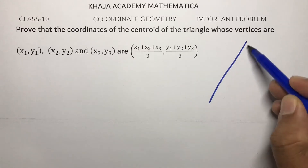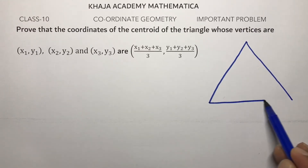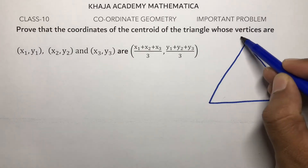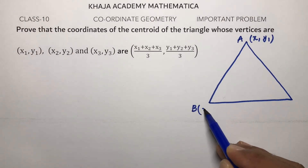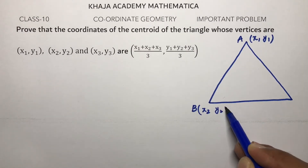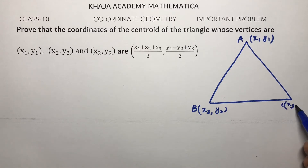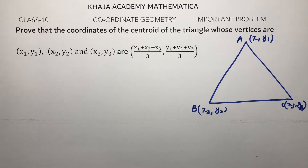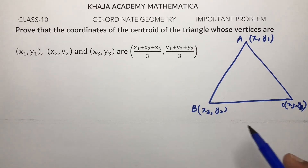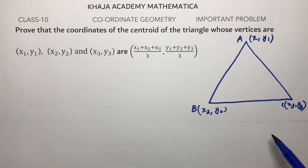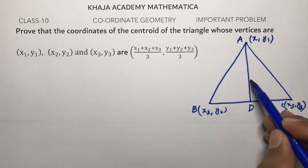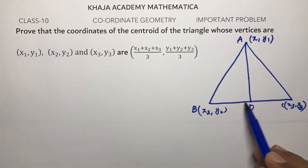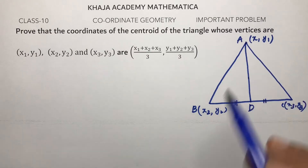The triangle whose vertices are x1 y1, x2 y2, x3 y3 — these are the three vertices. Now we need to find the centroid. The centroid is nothing but the point of intersection of medians. A median is nothing but a line joining the midpoint of one side to the opposite vertex.